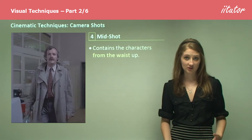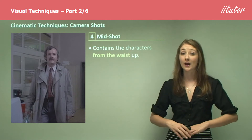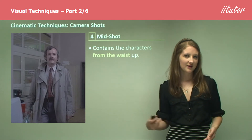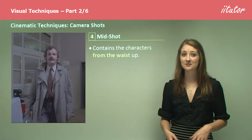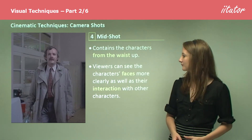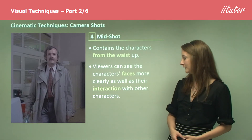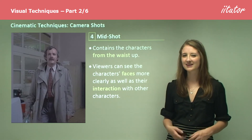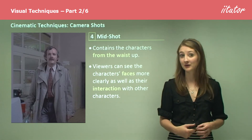We then move to the mid shot. The mid shot contains the characters from the waist up, so you're only seeing half of their body, but that's going to provide you with more detail. You're going to be focusing on their face and their upper body language. Viewers can see the characters' faces more clearly, as well as their interaction with other characters. This is really important in establishing relationships and also for conducting dialogue.